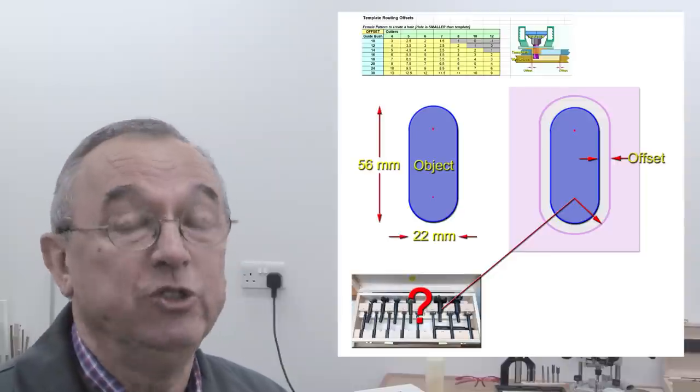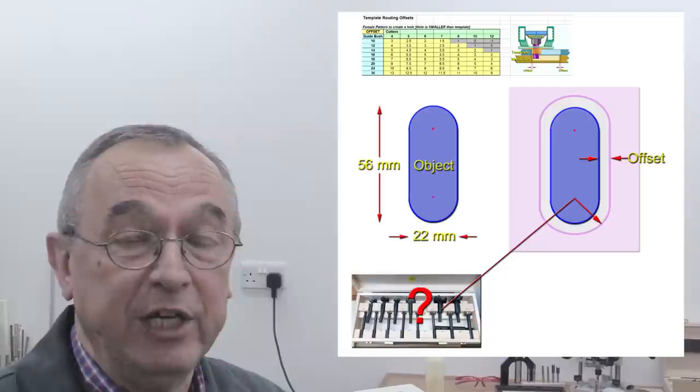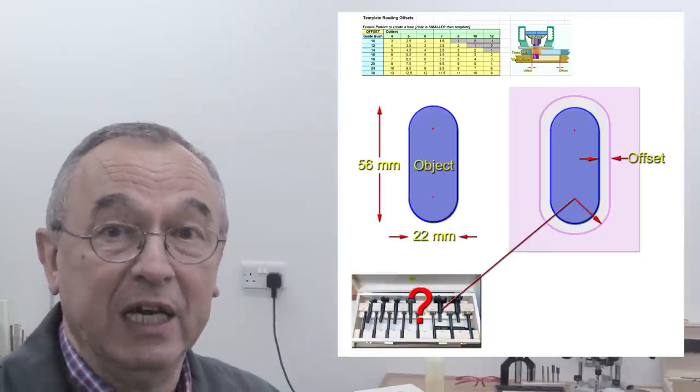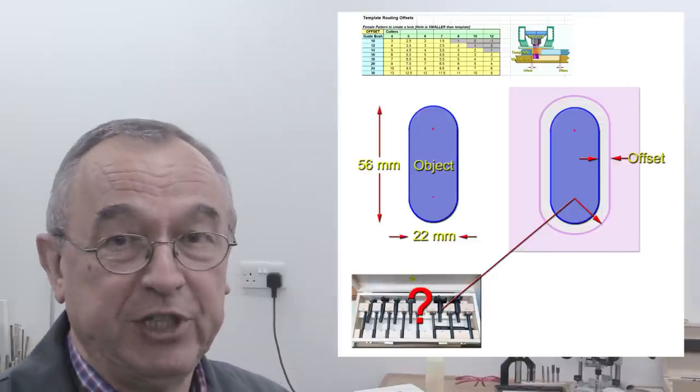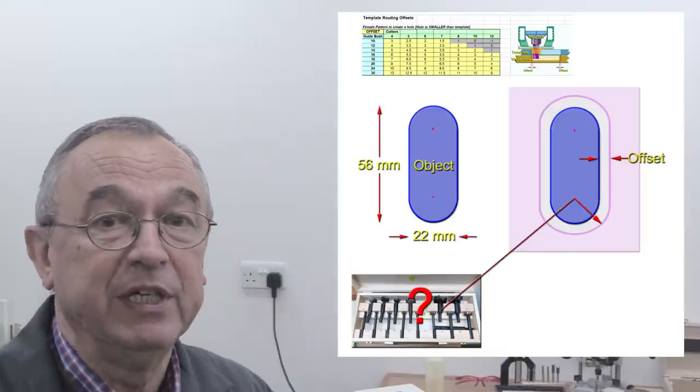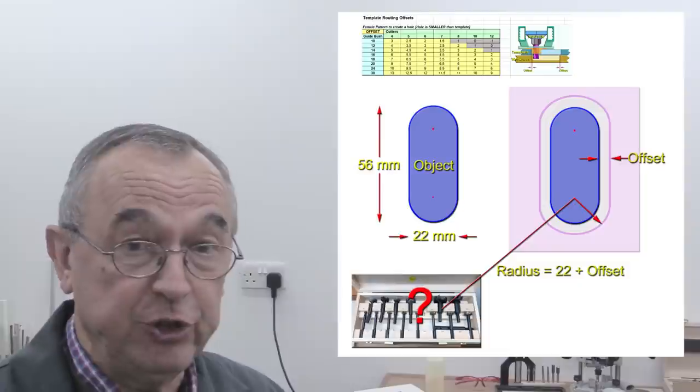what range of cutters, there might be only one or two, and what range of guide bushes, again, there might be only one or two, suit that particular offset. Now, in this particular example, the radius of the drill has to be 22mm plus whatever offset we choose.